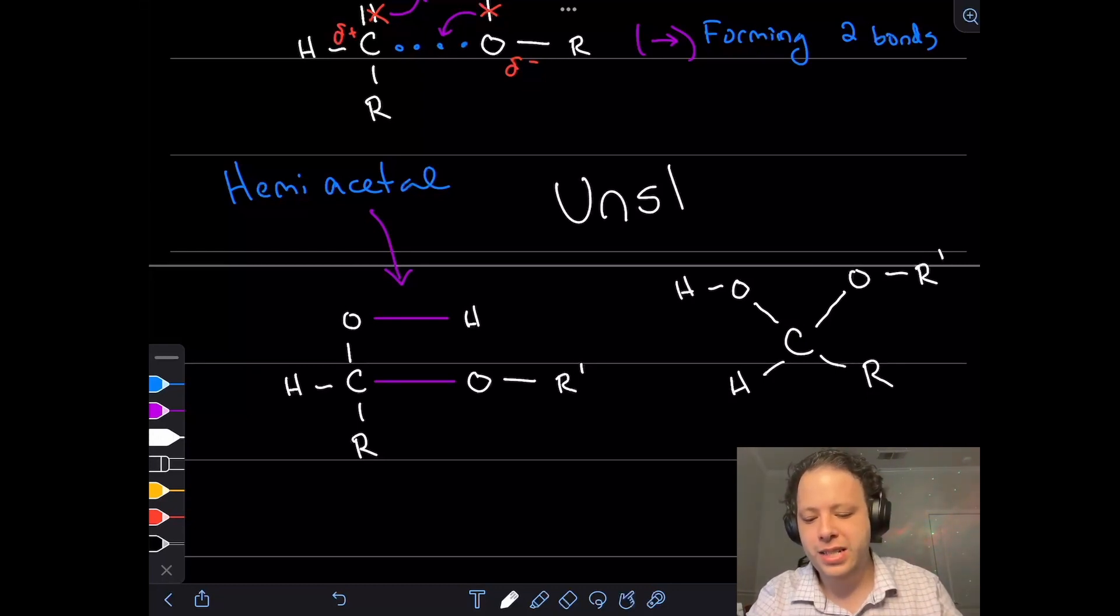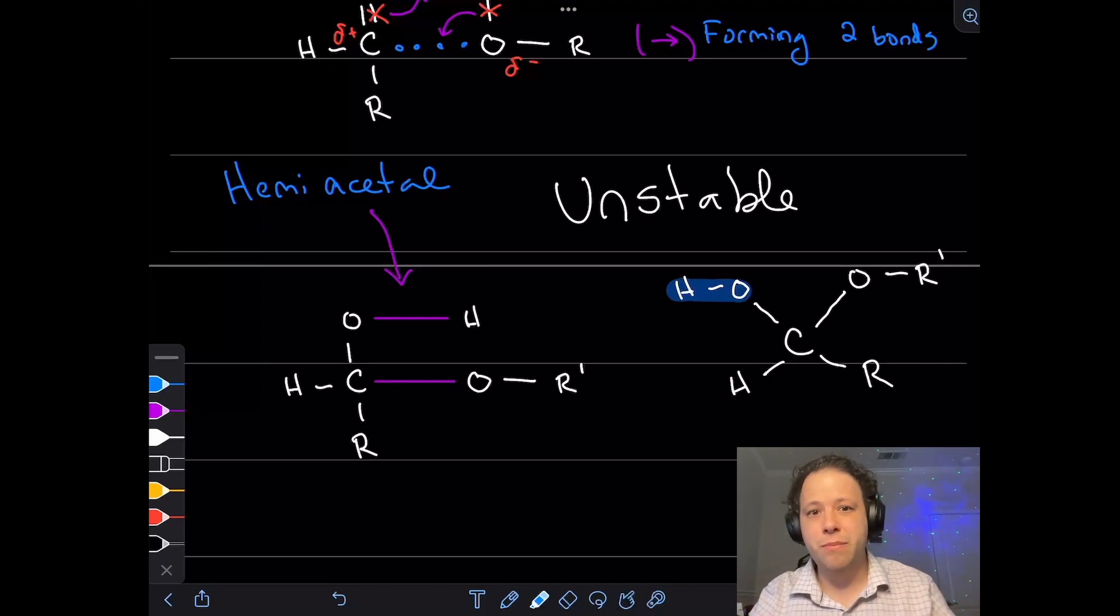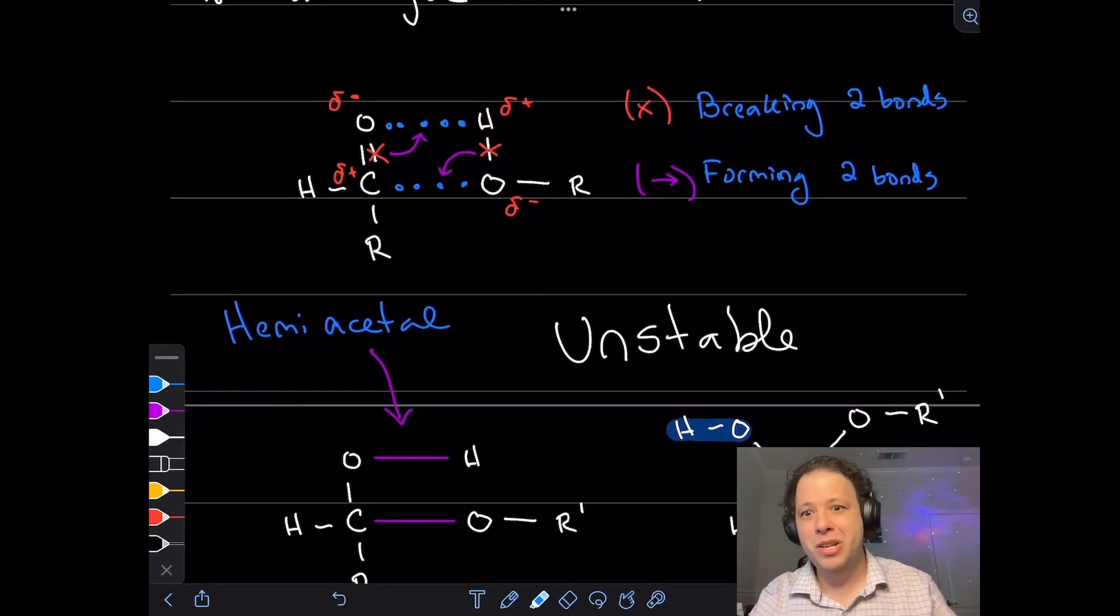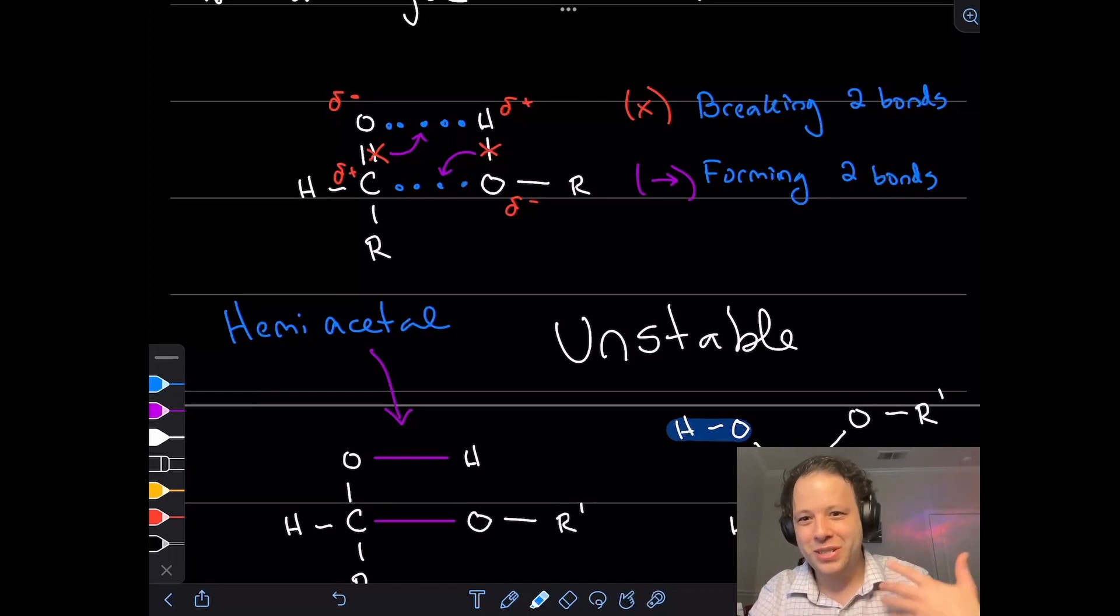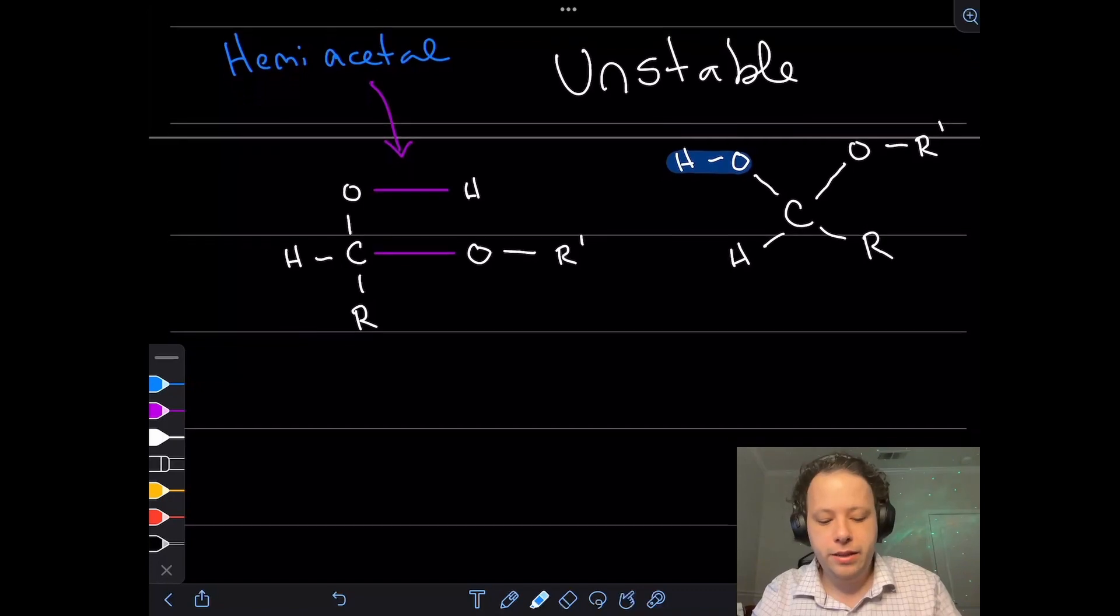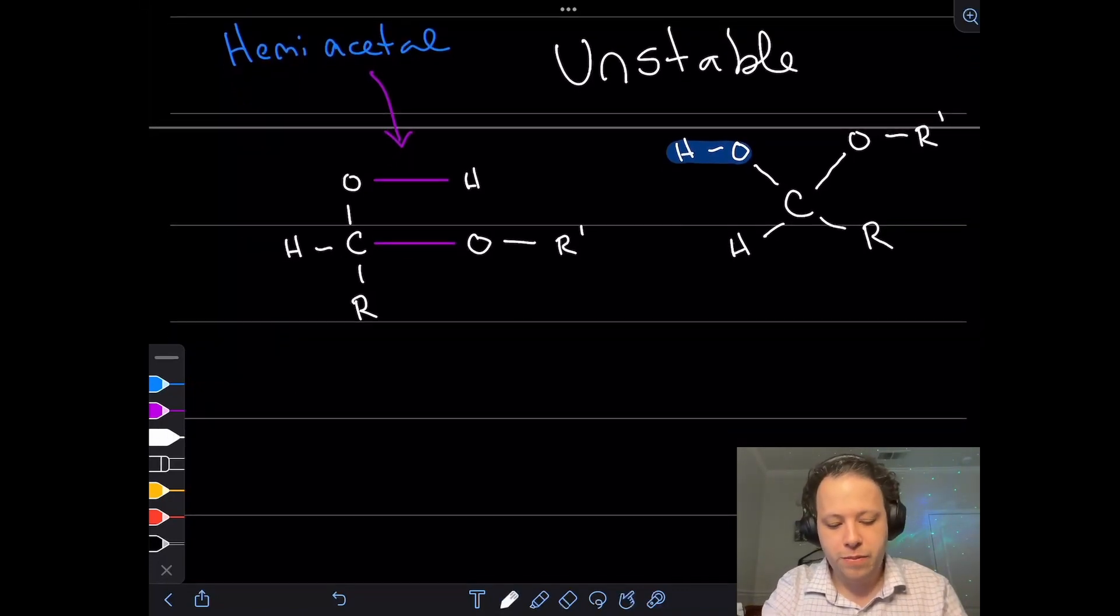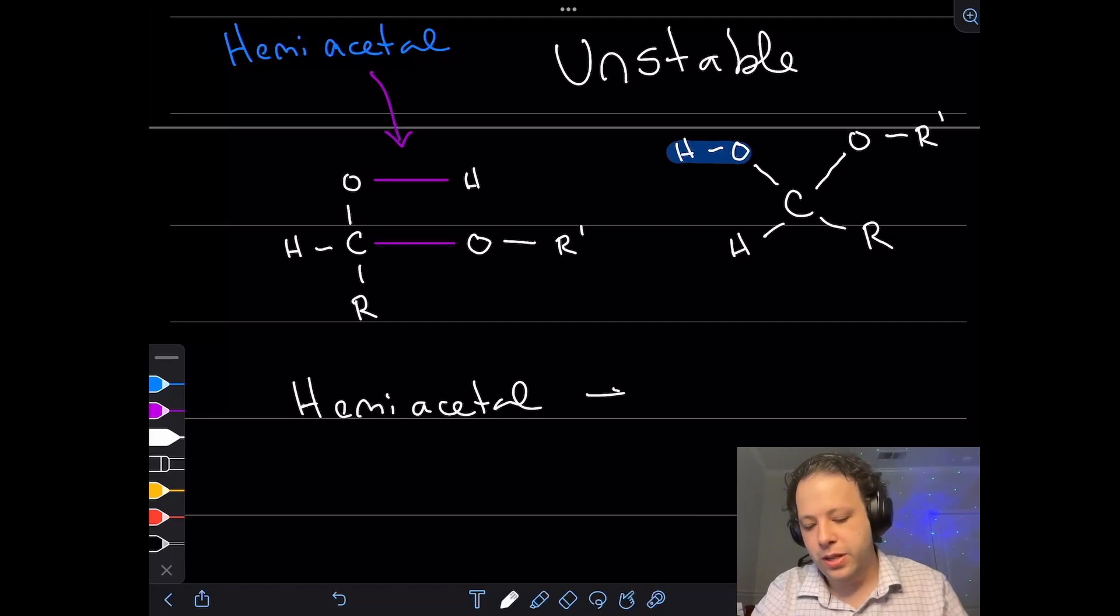So this though is not the final step. Hemiacetals are very unstable. They tend to not want to be in this structure all the time. And the reason behind that has to do with this little alcohol here. As you kind of noticed in the last step, it caused the whole reaction in the first place. Well, the reaction is going to continue because it wants to keep going. So how do we get to the final step? Well, it has to go from a hemiacetal to an acetal.